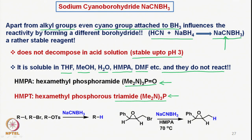Sodium cyanoborohydride can reduce halides such as RI, RBr, or R-tosylate where there is a good leaving group — iodide, bromide, tosylate, or mesylate. The leaving groups depart and hydrogen is introduced at the R position. For example, in HMPA at 70 degrees, we can reduce a carbon–bromine bond and introduce a carbon–hydrogen bond in a sensitive molecule.